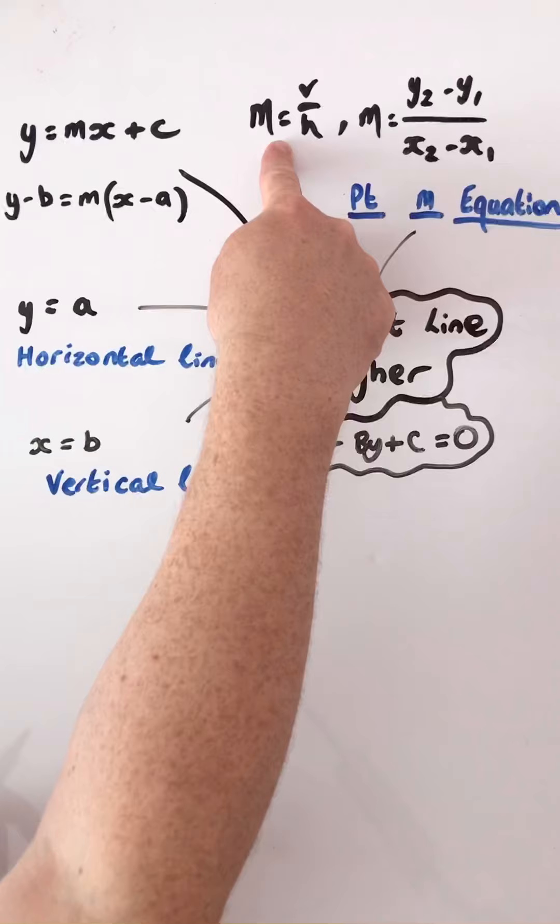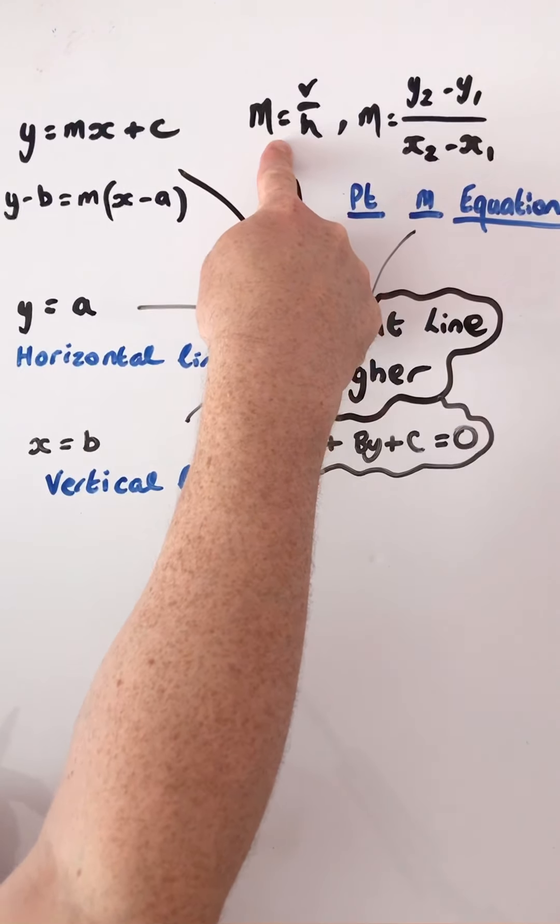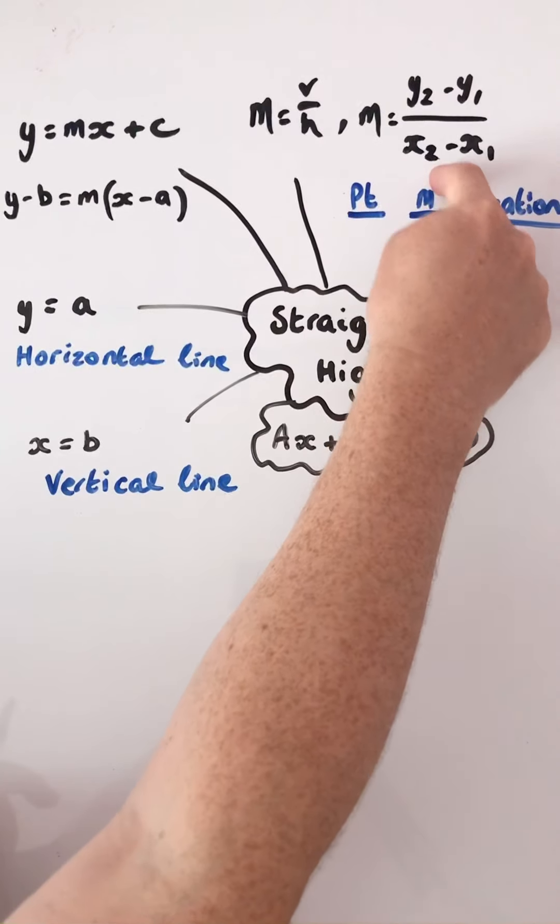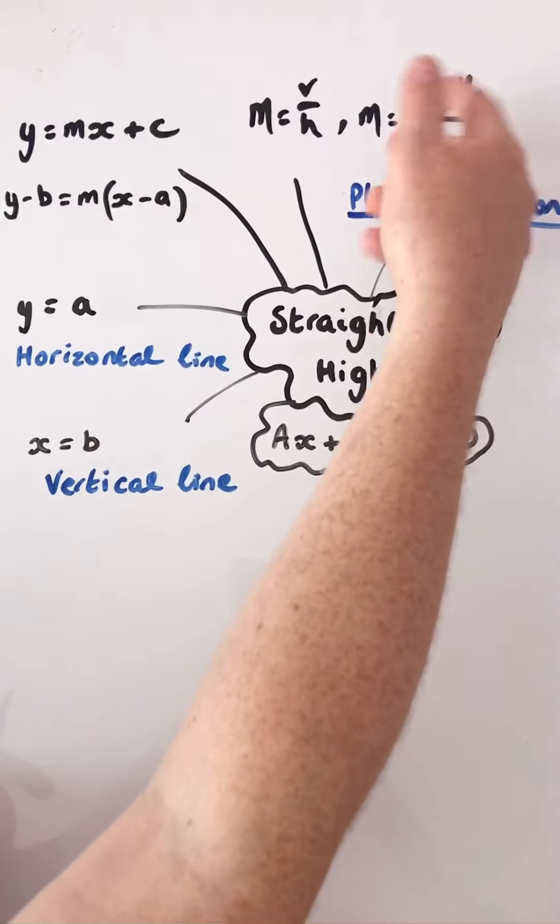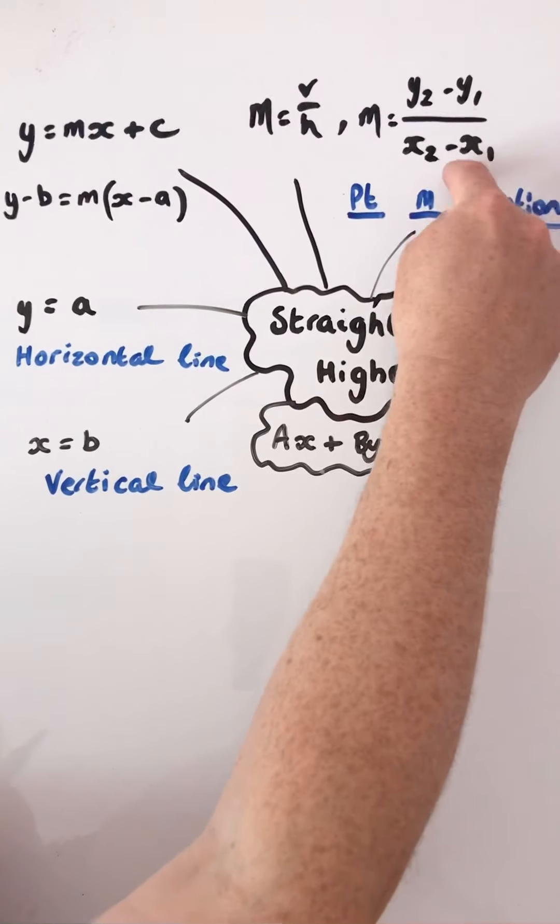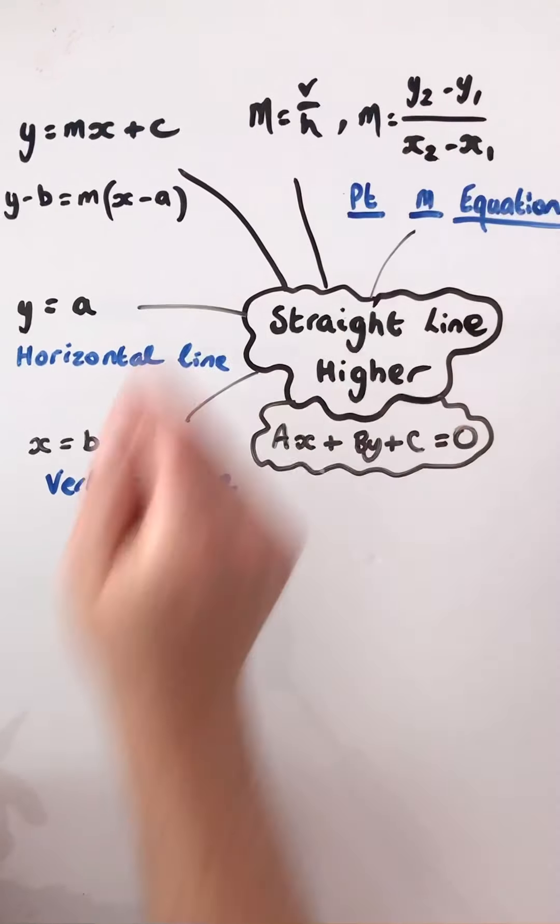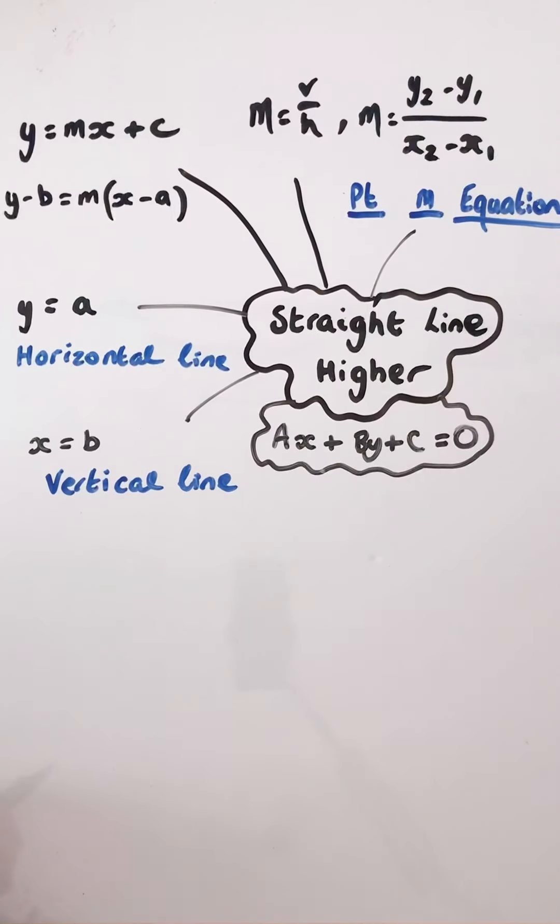We've got a gradient formula, y equals v over h, and we've got, again, like this, probably the preferred method as you go through the topic to calculate the gradient when you're given coordinate points.